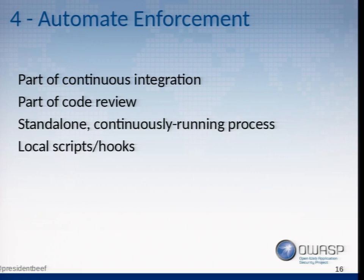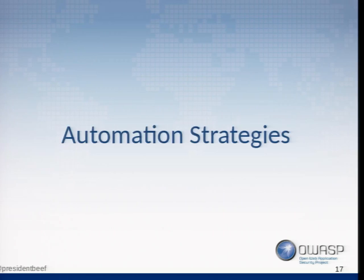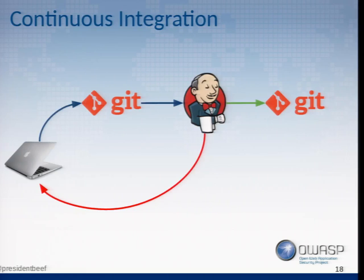These are strategies, and there's no single correct one. You have to look at possible strategies and think about how they fit your organization, your development workflow, and what's going to work for you. First up: continuous integration. In this strategy, a developer pushes a branch in Git, and some process — maybe in Jenkins or another tool — runs tests or checks. If they pass, it merges the branch; if not, it rejects it and pushes back to the developer.